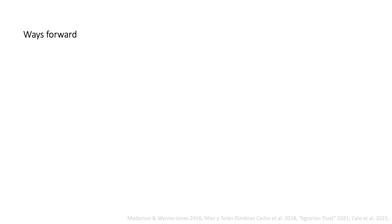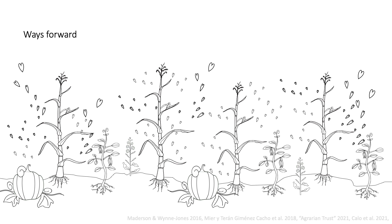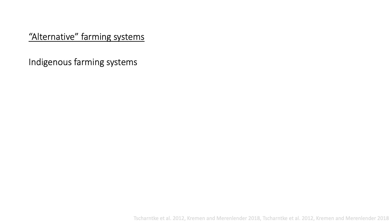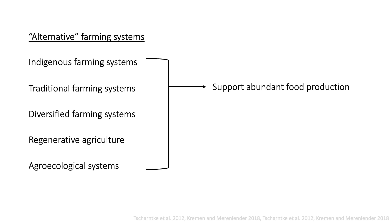Fortunately, there are ways forward. Beekeepers, farmers, individuals, communities, and organizations in the United States and all over the world are working to envision, enact, and defend alternatives to industrial agriculture, and to realize the social, political, and economic changes that must accompany their widespread implementation. These efforts are supported by ample research which demonstrates that so-called alternative farming systems — including the many varied and often overlapping forms of indigenous, traditional, diversified, regenerative, and agroecological farming systems — support abundant food production, and can help to repair many of the harms imposed by industrial agriculture.